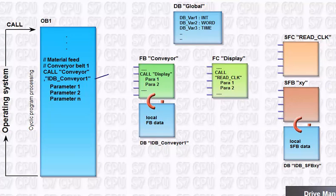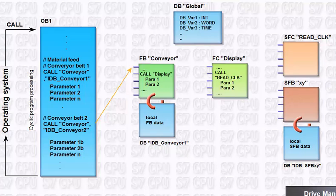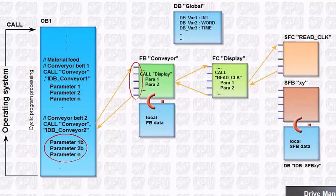After the program of the first conveyor belt has been processed completely, all further plant parts intended for execution are successively called in OB1. Identical plant components, such as a further identical conveyor belt, can now be processed by simply calling the same block with other I/O parameters and a separate instance DB.